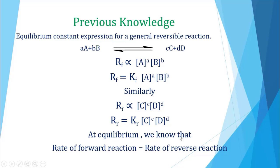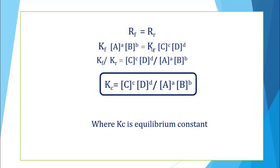Similarly, rate of reverse reaction is directly proportional to concentration of C raised to power c, into concentration of D raised to power d — these exponents are the number of moles of products. Rate of reverse reaction is equal to KR times concentration of C times concentration of D, where KR is the rate constant for reverse reaction. At equilibrium, we know that rate of forward reaction is equal to rate of reverse reaction.